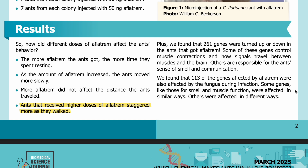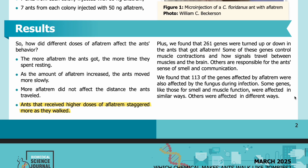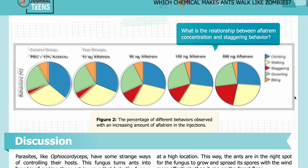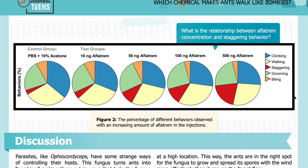Some genes, like those for smell and muscle function, were affected in similar ways by both aflatrem and the fungus. Others were affected in different ways. Here in Figure 2, you can see the percentage of different behaviors observed with an increasing amount of aflatrem in the injections. On the far left, you can see results from the control group of PBS, or phosphate-buffered saline, and 10% acetone.